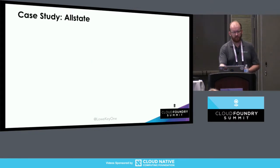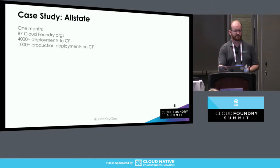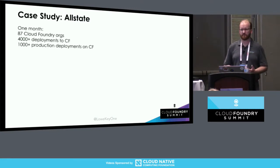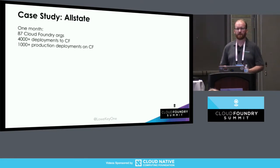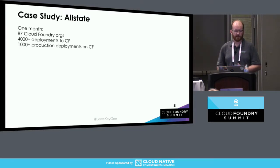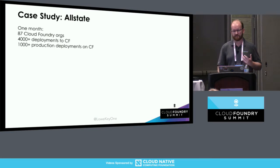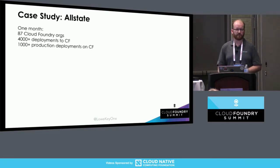What that's ended up looking like for us is we have about 87 Cloud Foundry orgs in prod, which is roughly a one-to-one mapping to product teams. Across all our environments we have over 4,000 deploys each month, with about 1,000 of those going to prod. So if we were to ask people to go through all of those steps manually for every single one of those deploys, it would be painful and would basically suck for everybody.